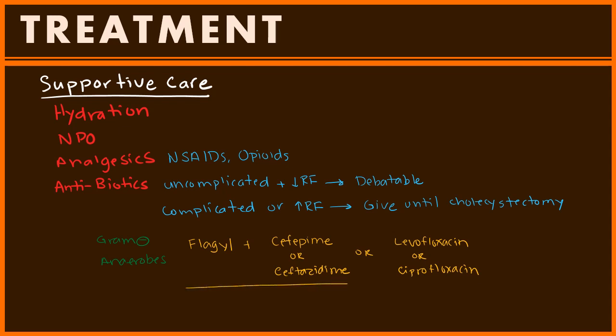For sicker patients, it's reasonable to use piperacillin-tazobactam (Zosyn) or ertapenem — particularly when concerned about sepsis with elevated lactate or hypotension, or higher-risk patients with possible concurrent infections. Try to stay as narrow as possible, but broaden when warranted. Consider vancomycin only if you suspect hospital-acquired infection of the gallbladder. Many patients improve with supportive care and can then be planned for elective surgery, but some require emergency cholecystectomy.